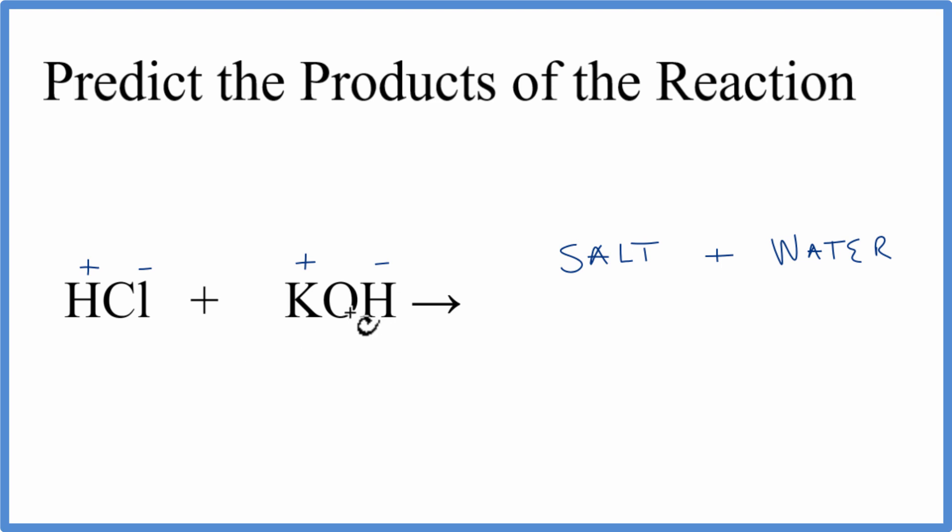So we have these charges. The positives in a double displacement reaction, the hydrogen and the potassium, they'll switch places.